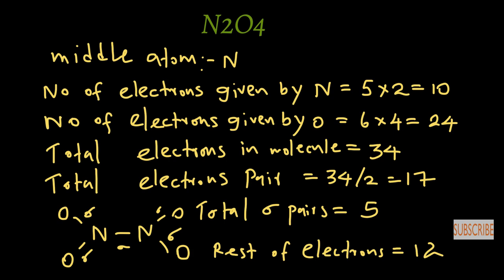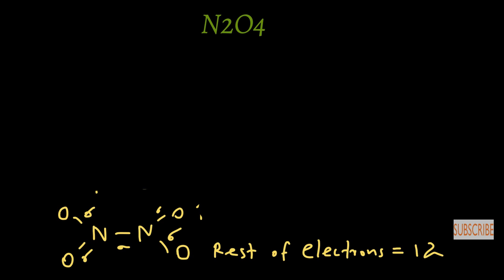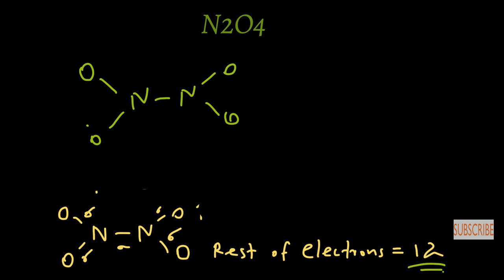We now need to fill all the oxygen and nitrogen atoms with these remaining 12 electrons to get the most stable figure for N2O4. We fill starting from oxygen, using the octet rule. Each oxygen takes three lone pairs of electrons.